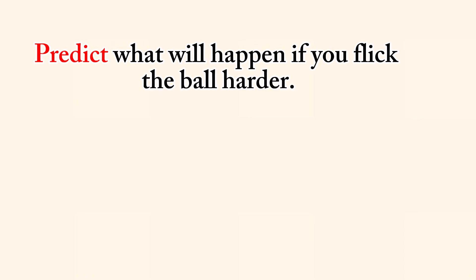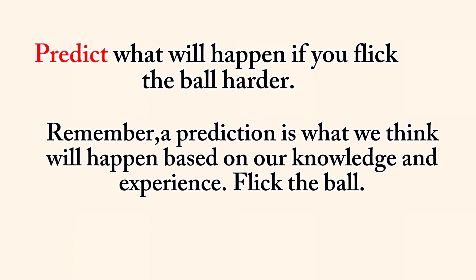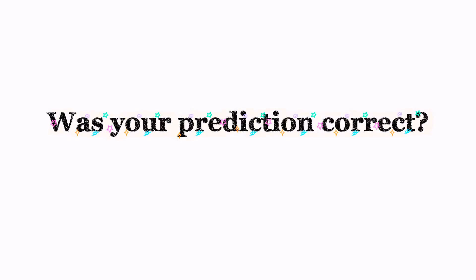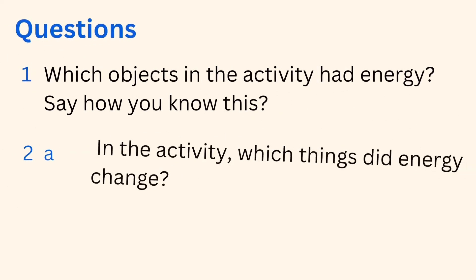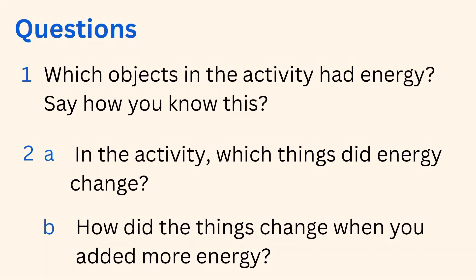Predict what will happen if you flick the ball harder. Remember, a prediction is what we think will happen based on our knowledge and experience. Flick the ball. Was your prediction correct? Say why you think this happened. Question one: Which objects in the activity had energy? Say how you know this. Question 2a: Which things did energy change? Question 2b: How did the things change when you added more energy?